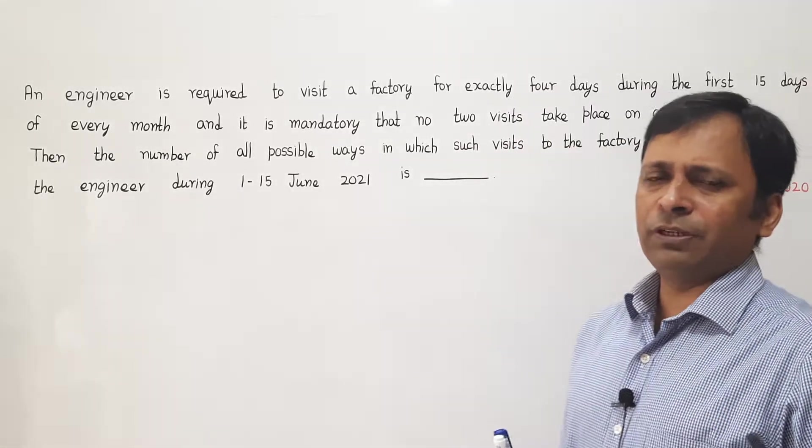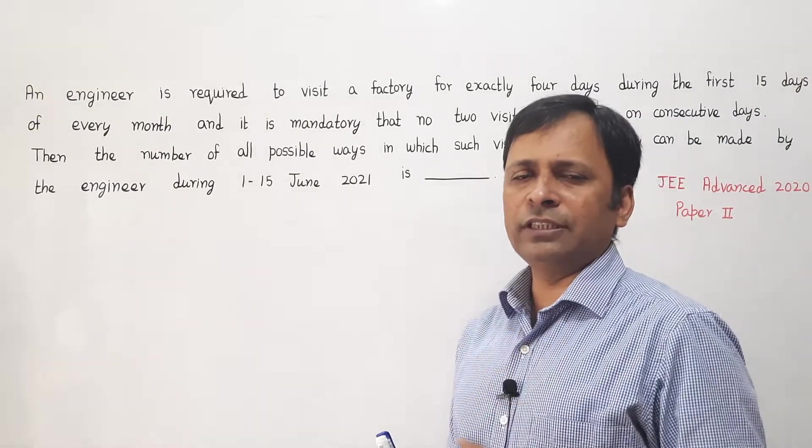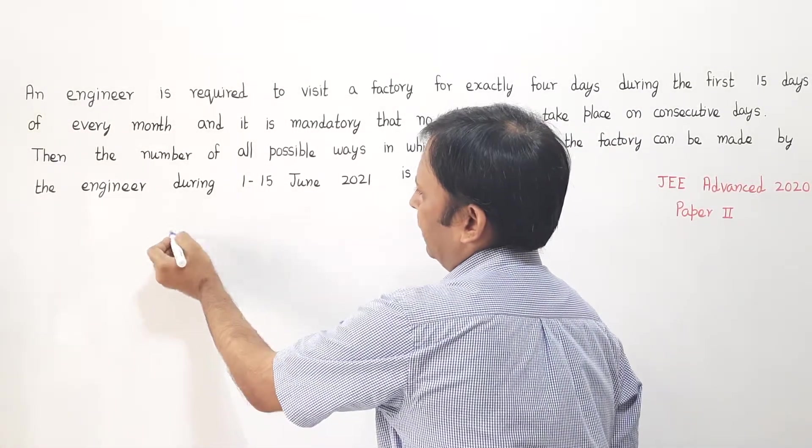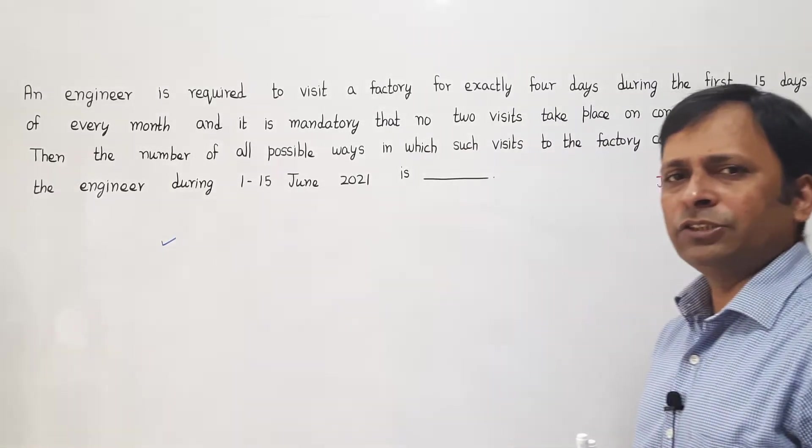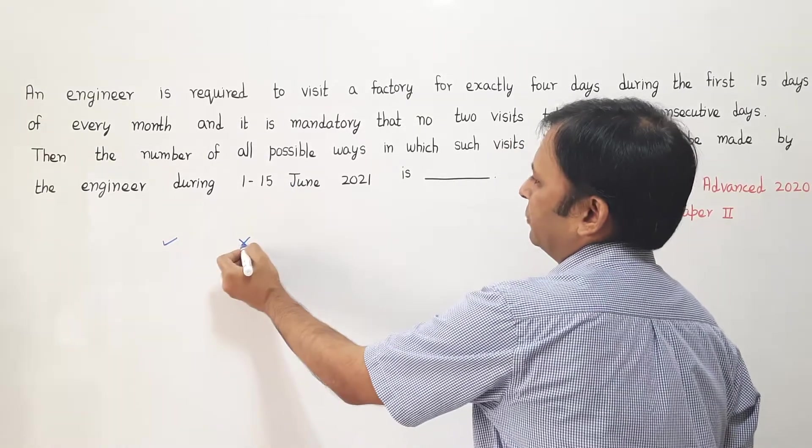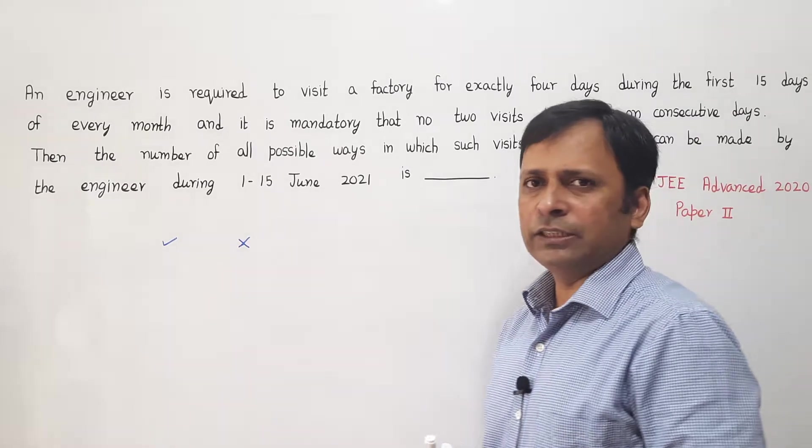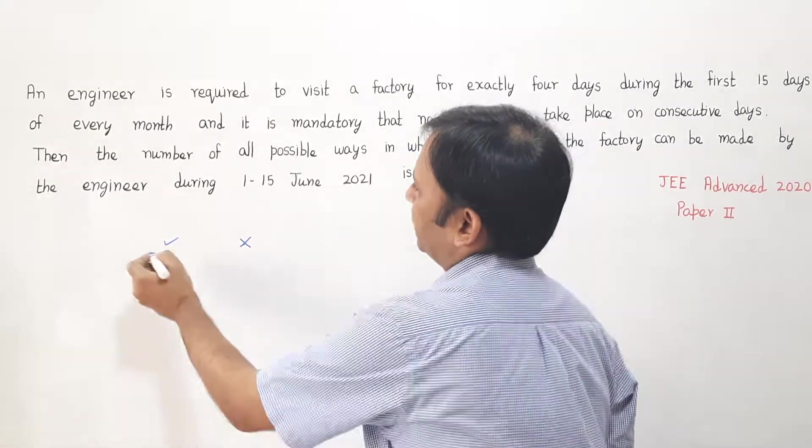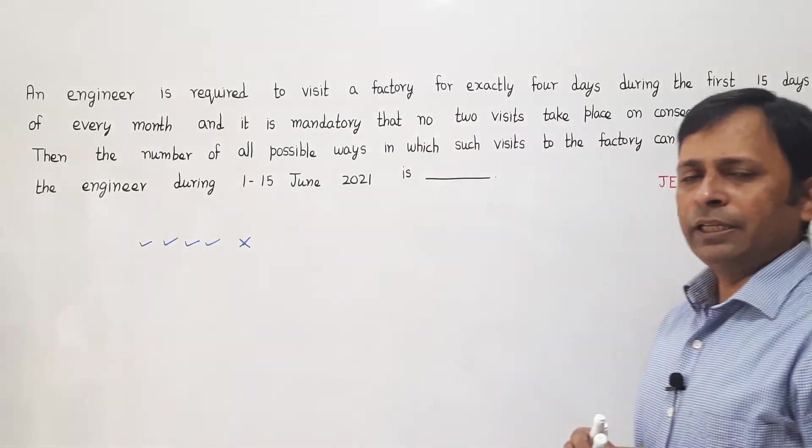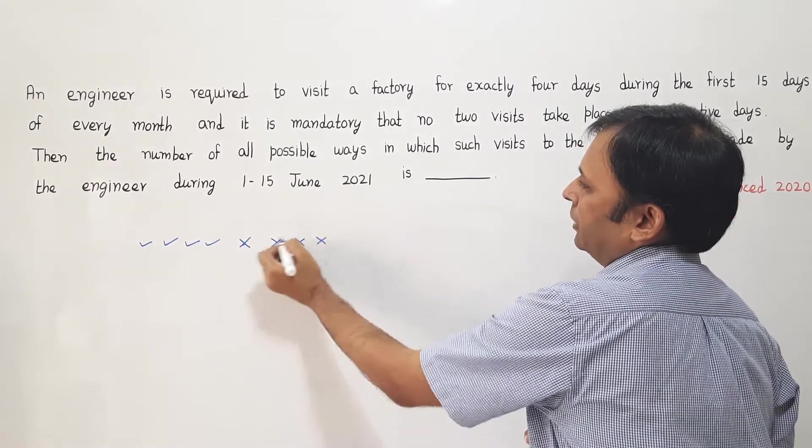Now to understand this problem, let us first see: suppose if he is making a visit on a certain day, then I am placing a tick for that. And suppose if the engineer is not making any visit on a particular day, then I am putting a cross for that. So total we have 15 days. If he is making 4 visits, then I will place 4 ticks like this: 1, 2, 3, and 4.